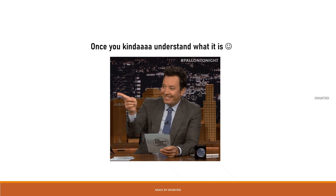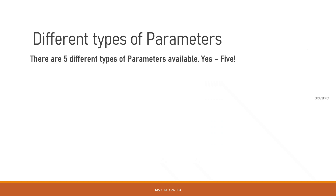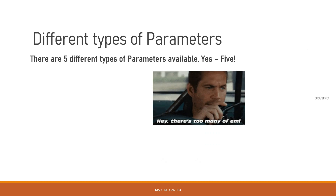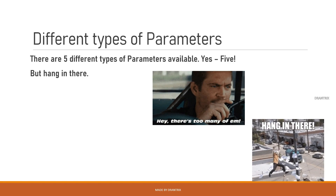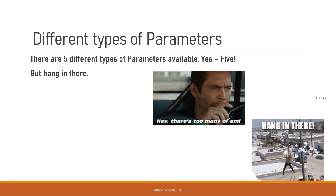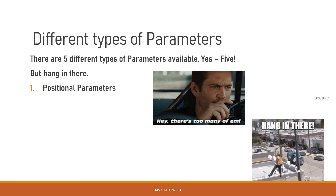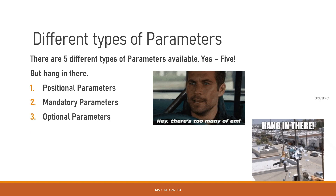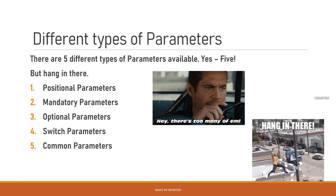So let's get into the main picture. There are five different types of parameters available: positional parameters, mandatory parameters, optional parameters, switch parameters, and finally common parameters. I know there are quite a few, but hang in there — we will go through each one of them with examples.